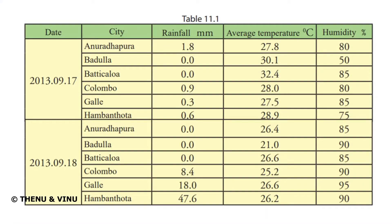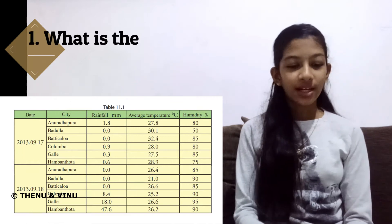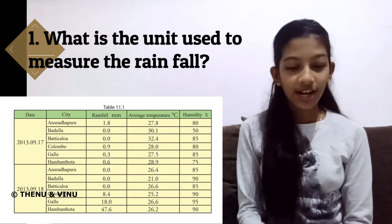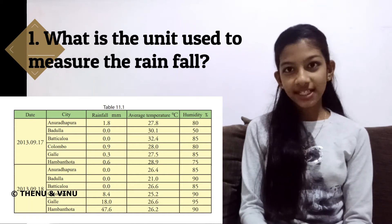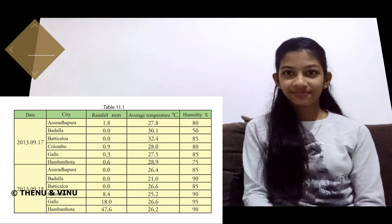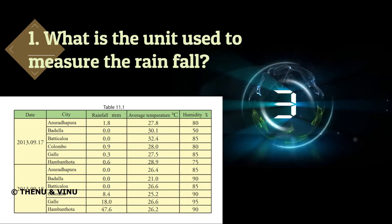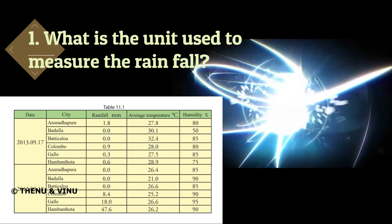Here you can see table 11.1 on the screen. Using this table they have asked a few questions — let's try to answer. The first question is: what is the unit used to measure the rainfall? The answer for this question is millimeters.